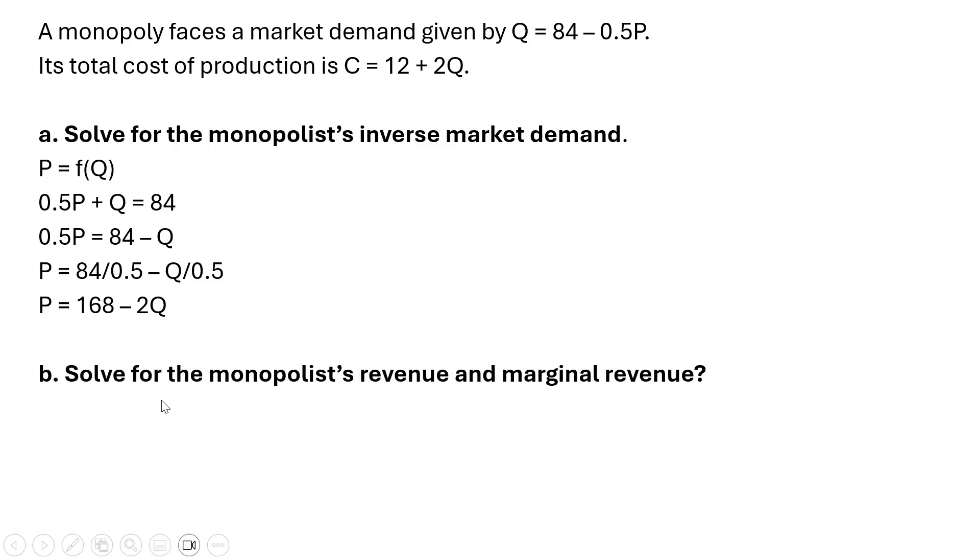Now let's solve for the monopolist revenue and marginal revenue. Revenue is price times quantity, where the price is going to be this 168 minus 2q. So we replace p with 168 minus 2q and that's all multiplied by q.